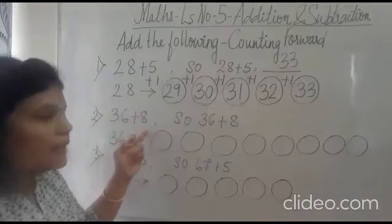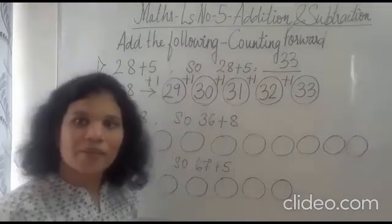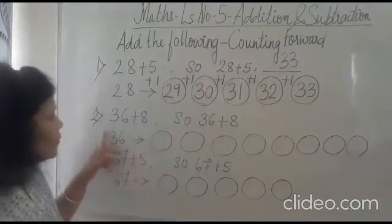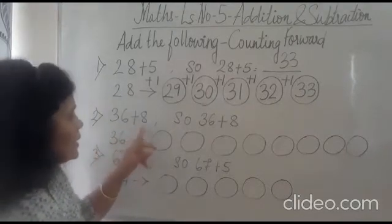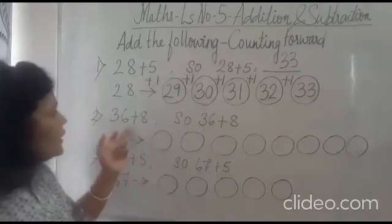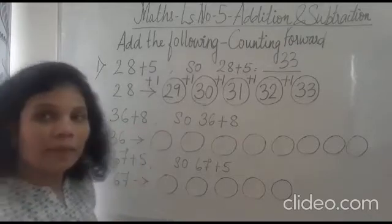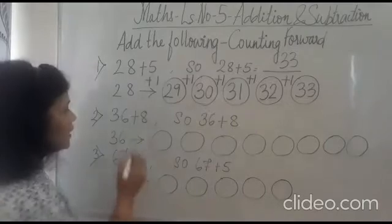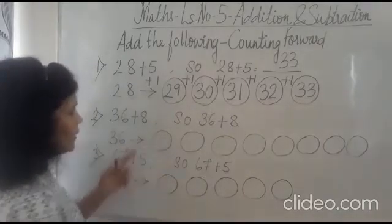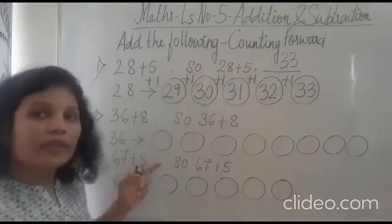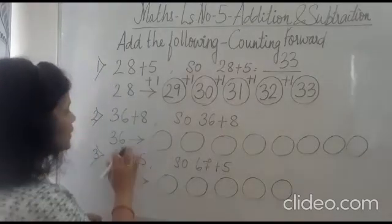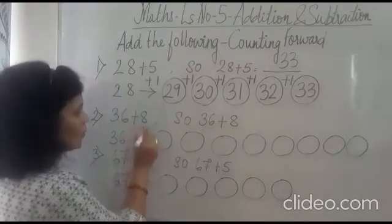It is 36 plus 8. So are you ready with your pencil and book? Now we are going to see 36 plus 8. How to add 36 plus 8 with the step of counting forward? Correct. Now counting forward means as I explained you it is one step ahead.